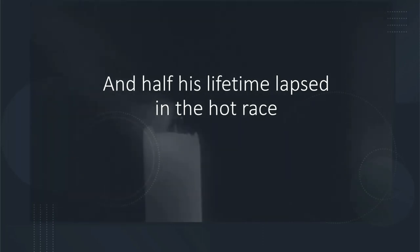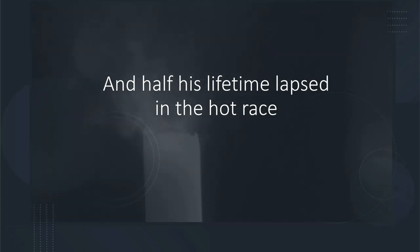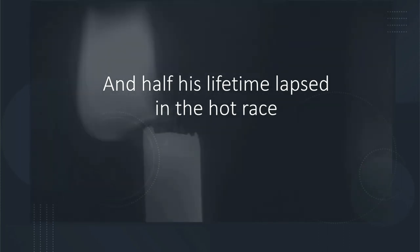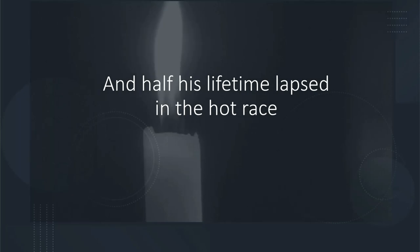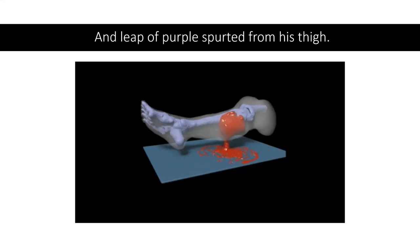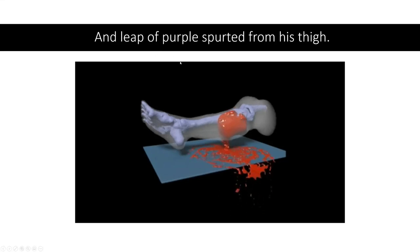As a result of all this blood loss, 'half his lifetime lapsed in the hot race.' The phrase 'hot race' is a metaphor for war — the competitive aspect of war compared to the competitive aspect of a race, fighting for survival. If he was destined to live till 80, now his life is cut in half. Then there's graphic imagery: 'a leap of purple spurted from his thigh' — the colour purple referring to dark blood — showing he suffered a very serious injury.